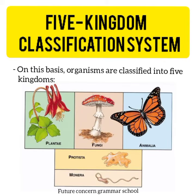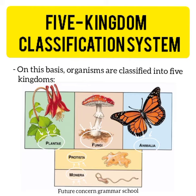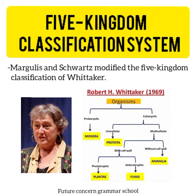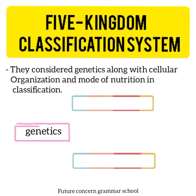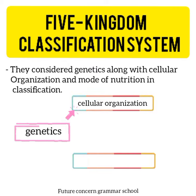On this basis, organisms are classified into Five Kingdoms: Monera, Protista, Fungi, Plantae, and Animalia. Margulis and Schwarz modified the Five Kingdom classification of Whittaker. They considered genetics along with cellular organization and mode of nutrition in classification.